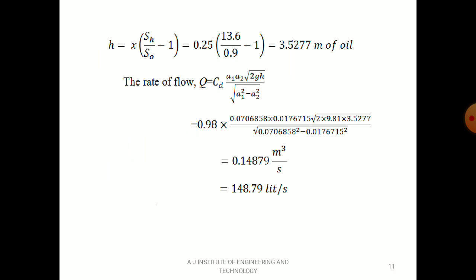Differential head h = x × (s_h/s_o − 1) = 0.25 × (13.6/0.9 − 1) = 3.5277 m of oil. Rate of flow Q = C_D × A₁A₂ × √(2gh) / √(A₁² − A₂²) = 0.98 × 0.0706858 × 0.0176715 × √(2 × 9.81 × 3.5277) / √(0.0706858² − 0.0176715²) = 0.14879 m³/s = 148.79 L/s.